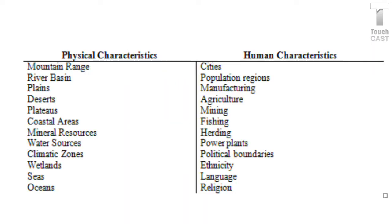Here is a T-chart — go ahead and copy this into your notes. It compares physical and human characteristics. Physical characteristics include mountain ranges, river basins, plains, plateaus, and wetlands. Human characteristics include cities, population regions, fishing, power plants, religion, and political boundaries.